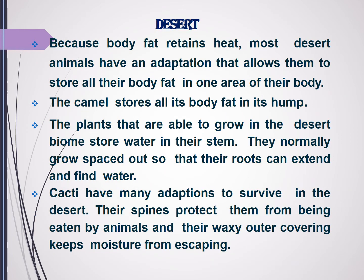Body fat retains heat, so most desert animals have an adaptation that allows them to store their body fat in one area of their body — for example, camels have humps where they store their body fat. Plants that grow in desert ecosystems can store water in their stems, for example cactus. Cacti have adaptations such as spines that protect them from being eaten by animals, and a waxy outer covering that retains moisture and prevents evaporation.